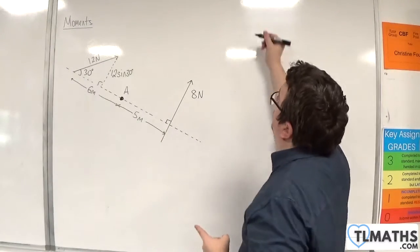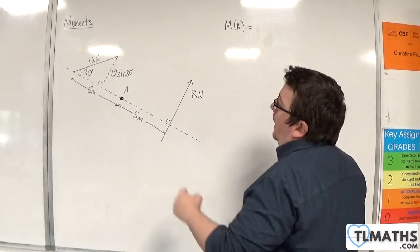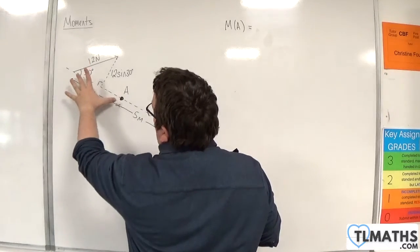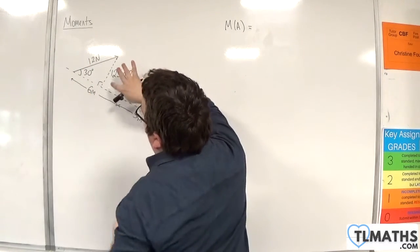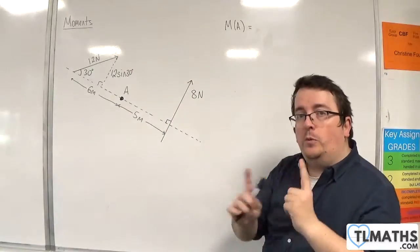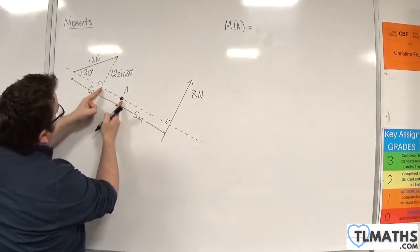Now, what I would then do is I would take moments about point A, and we are 6 metres away from the 12 sine 30. Now, this is the bit that's disconcerting with the way that I've drawn it. Because you might be thinking, well, I need to find that distance.